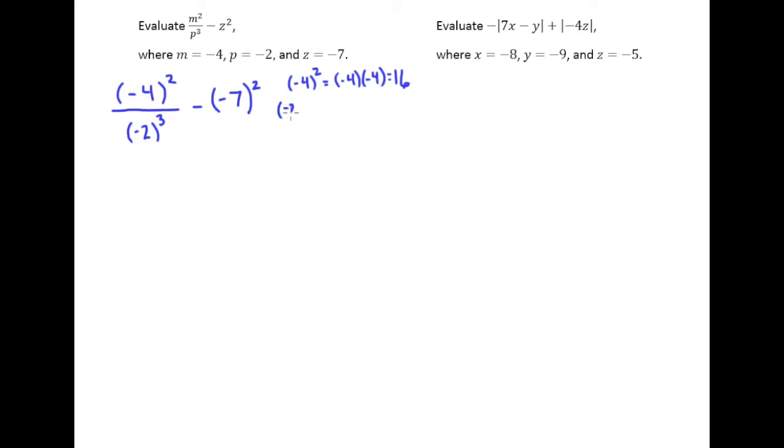Negative 2 cubed means we're going to take negative 2 times negative 2 times negative 2. Now, notice there are three negatives being multiplied together or an odd number, and so that's always going to give us a negative answer. And 2 times 2 times 2 is 8. And then finally, my negative 7 squared is negative 7 times itself, which is positive 49.